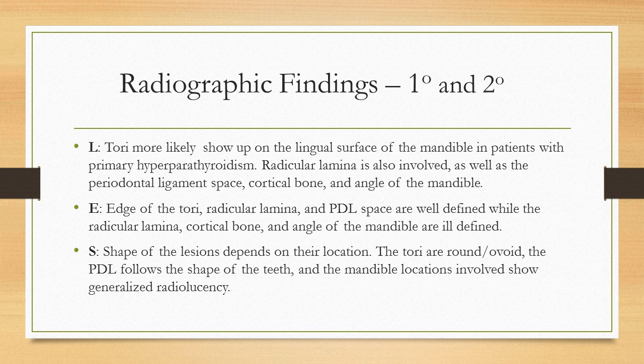Moving on to radiographic findings of primary and secondary hyperparathyroidism. Many studies have determined that there are different clinical radiographic signs that appear during the disease process, with multiple different areas being affected, including an increased incidence of tori, reduction of cortical bone, and increased PDL width. We will be describing these findings using the acronym LESION.